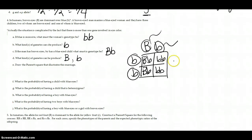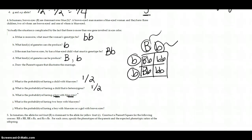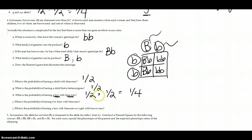The probability of having a child with blue eyes: to have blue eyes the child must be little b little b. There are two ways out of four to get that, so the probability is two fourths, or one half — always reduce. The probability of having a heterozygous child — meaning two different alleles — is also two out of four, or one half. What's the probability of having a boy with blue eyes? You have to consider both: probability of blue eyes is one half, probability of a boy is also one half. So a boy with blue eyes is one half times one half, which equals one fourth. These are independent events.